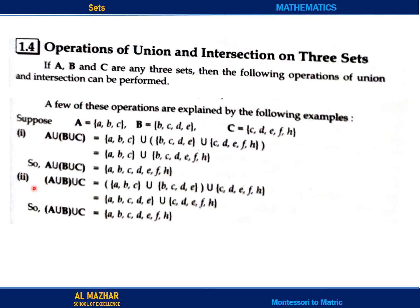Now number two is A union B, bracket, over union C. So here A and B elements we will write first — A union B — and then union C. So A and B we will join, which we will join in the same way.